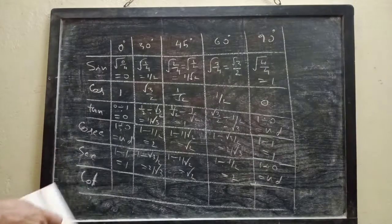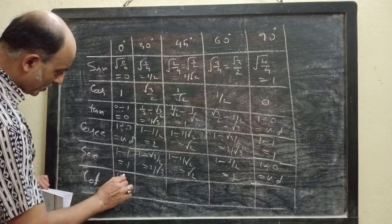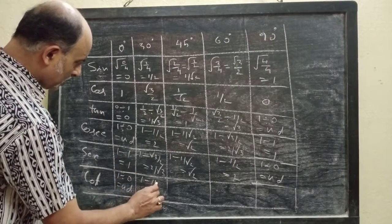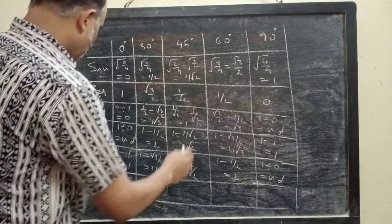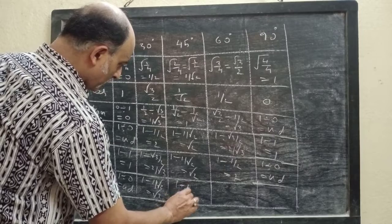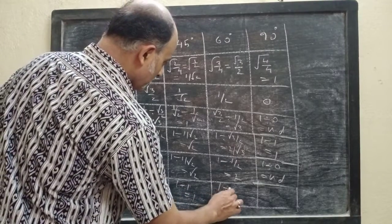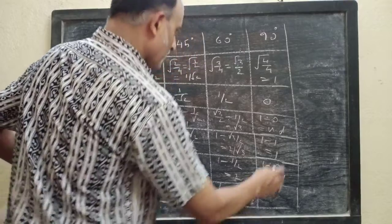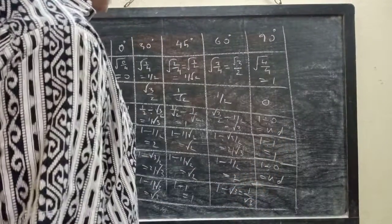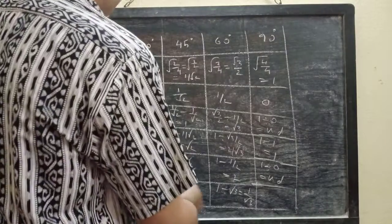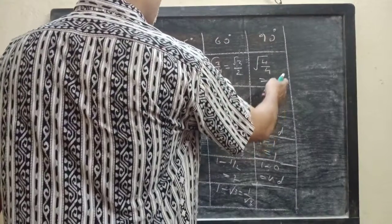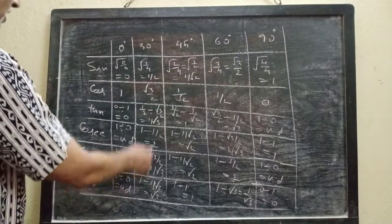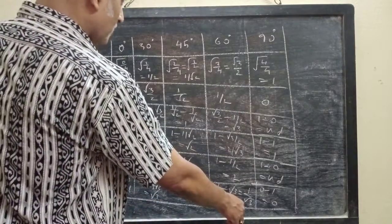Cot is the reciprocal of tan. Cot 0° = 1 ÷ 0, which is undefined. Cot 30° = 1 ÷ (1/√3) = √3. Cot 45° = 1 ÷ 1 = 1. Cot 60° = 1 ÷ √3 = 1/√3. Cot 90° can be thought of as cos 90° ÷ sin 90° = 0 ÷ 1 = 0. So: cot 0° = undefined, cot 30° = √3, cot 45° = 1, cot 60° = 1/√3, cot 90° = 0.